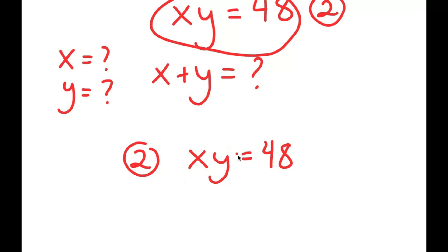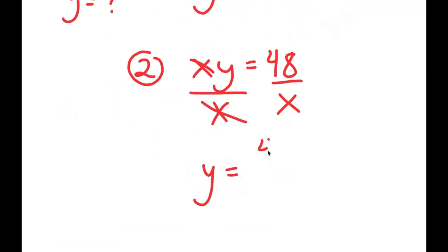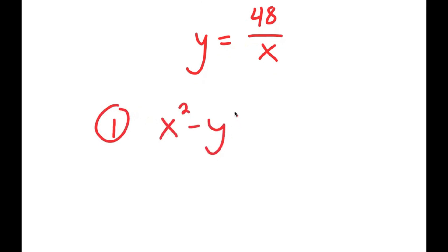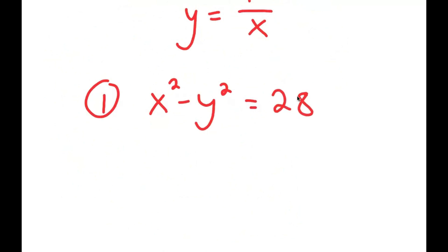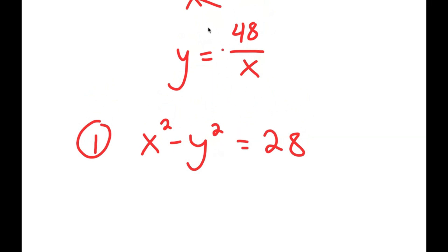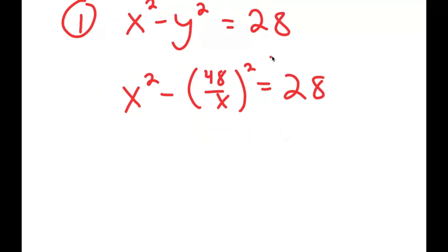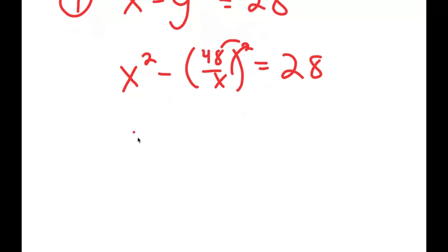I'm going to solve for y. To isolate it, I divide both sides by x, so I get y is equal to 48 over x. Now I can plug this back into equation 1: x squared minus y squared is equal to 28. Since y equals 48 over x, I get x squared minus (48/x) squared is equal to 28, which gives x squared minus 48 squared over x squared is equal to 28.